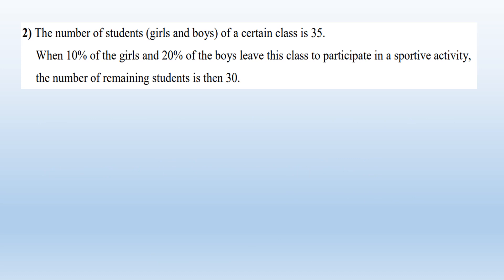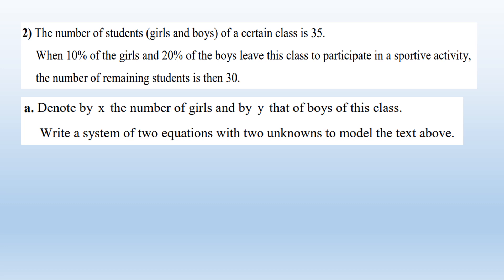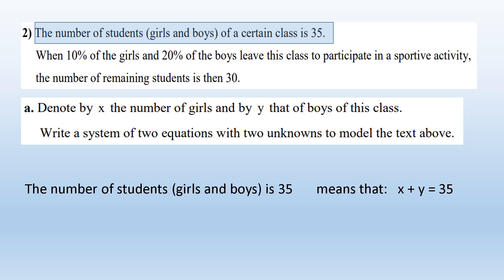Now let's complete. We have a class of 35 students — boys and girls. 10 percent of the girls left the class and 20 percent of the boys left the class. The new number of students in the class is 30. X is the number of girls and Y is the number of boys. The number of boys and girls before leaving the class is 35, so the first equation is X plus Y equals 35.